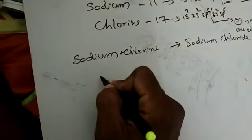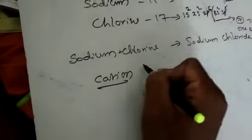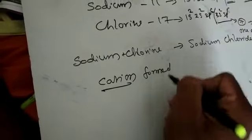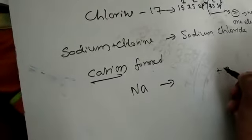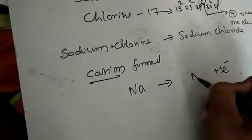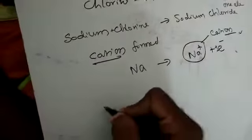Sodium on giving one electron becomes a cation. How is cation formed? Na gives off one electron and becomes Na+. So Na+ is the cation.